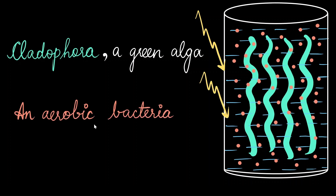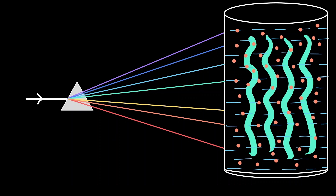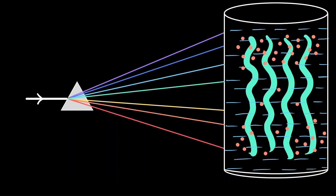He then added aerobic bacteria to the algae. Aerobic bacteria are used to detect the site of oxygen evolution — because they are aerobic, they tend to move towards regions where oxygen is produced. He then changed the way sunlight fell on the setup by passing it through a prism, which splits white light into seven colors (VIBGYOR). He noticed that the bacteria started mobilizing towards specific regions in accordance with the spectrum — mostly towards the blue-violet region as well as the red region, which was the first action spectrum of photosynthesis.